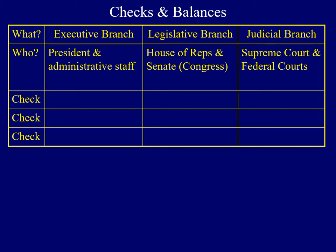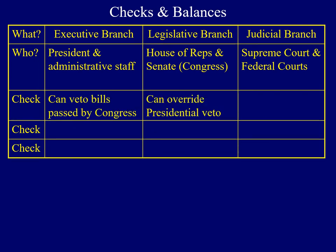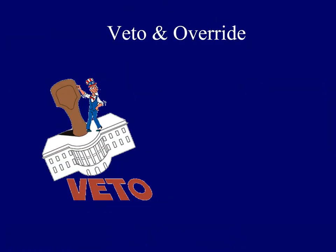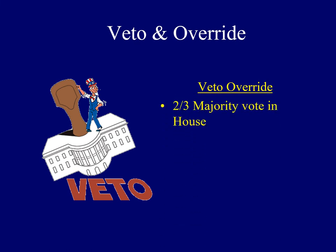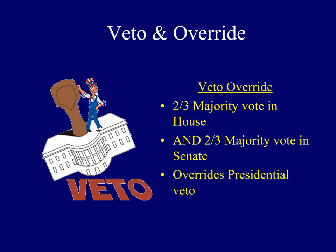If Congress passes legislation that the president doesn't support, the president has the authority to veto those bills. However, the legislative branch has the final say because the House and the Senate have the ability to override a presidential veto. In order for a bill to become a law, it has to pass by a simple majority. However, if the president vetoes a bill, a two-thirds majority vote in both the House and the Senate would override that presidential veto — meaning a bill can become a law even without the president's approval or signature.